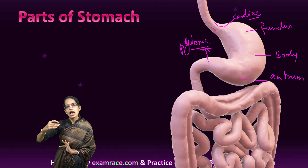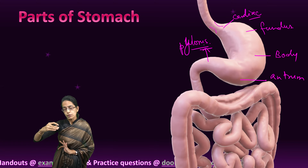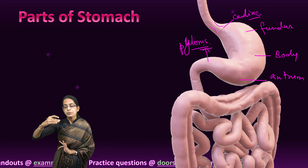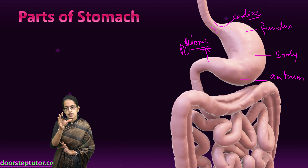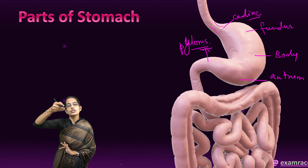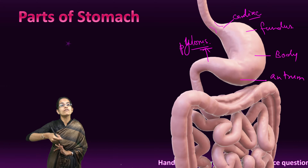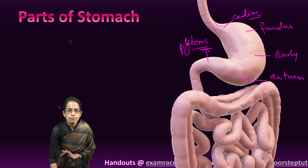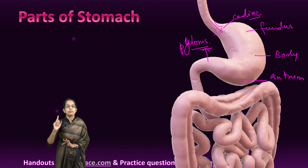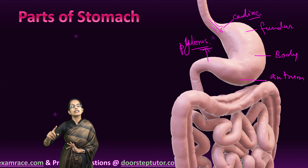At the cardiac region, we have the first sphincter, known as the cardiac sphincter. When food passes from the esophagus to the stomach, this sphincter constricts and ensures that the food does not move back towards the esophagus or food pipe. That is the major function of the cardiac sphincter. The cardiac is the first part of the stomach, just below the esophagus.